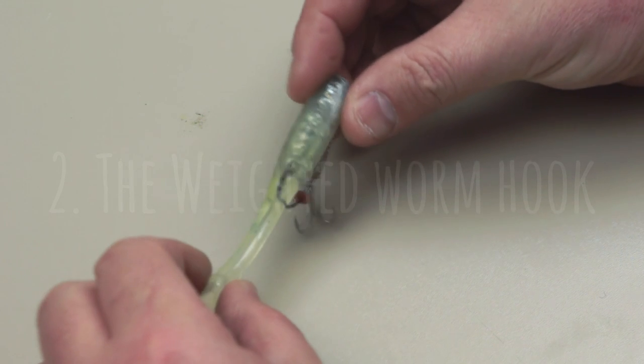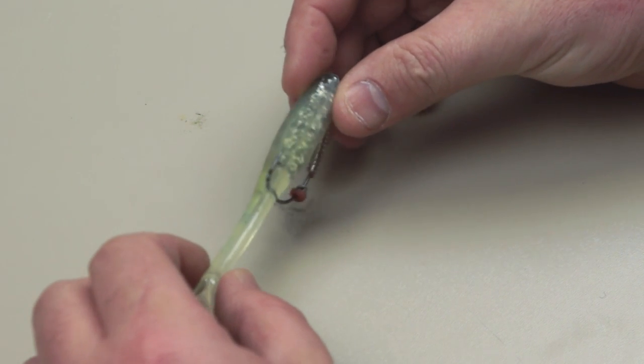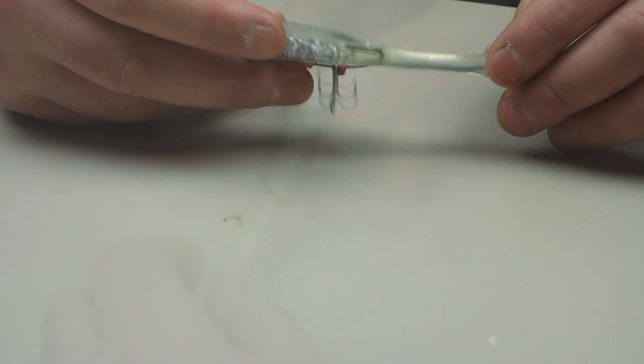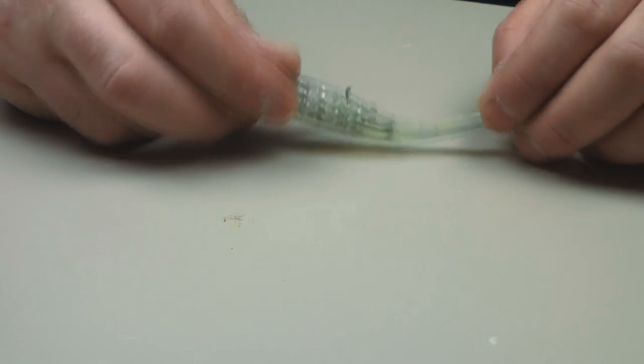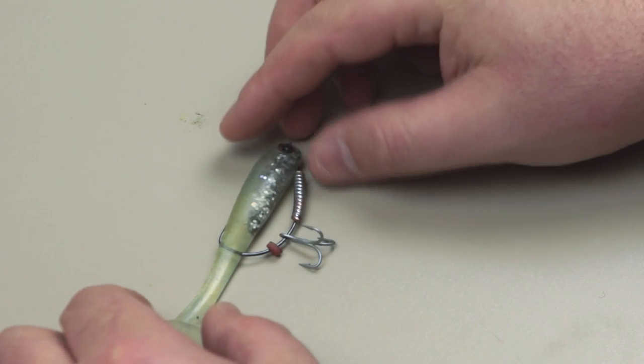So this is my current go-to setup for rigging the paddle tail, and there's a couple of things I really like about this. One is having this weight low down really makes it stable in the water, and the other bonus is this treble as a stinger hook.